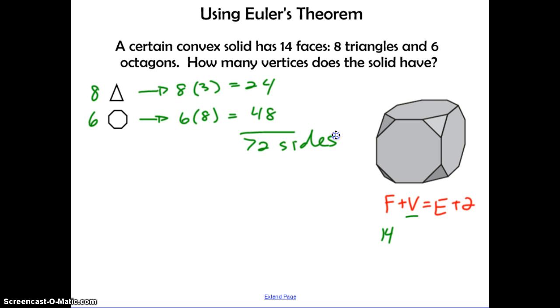And remember, we said that two sides equals one edge. So we want to take the 72 sides, divide it by two, and that gives us 36 edges. So we want to take those 36 edges, substitute it into Euler's theorem, and then we'll find that V is equal to 24.